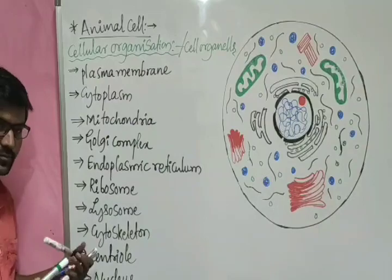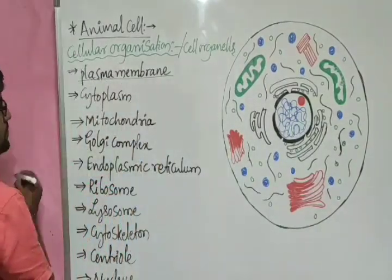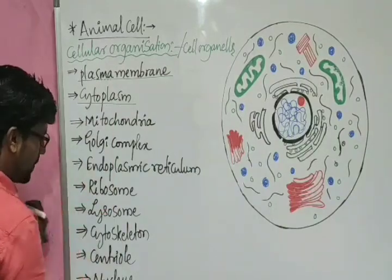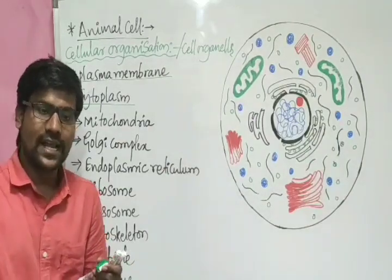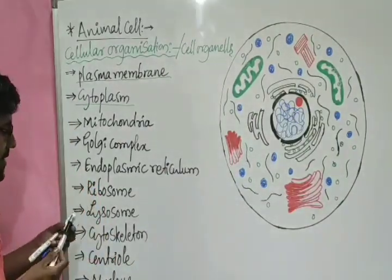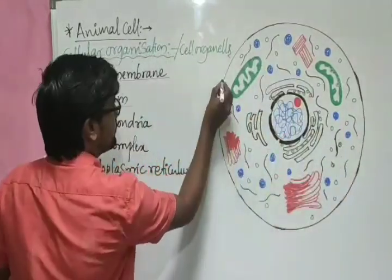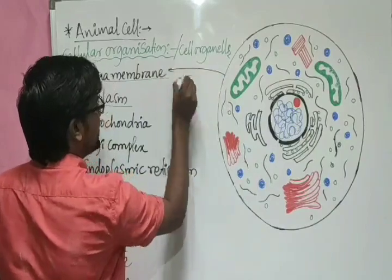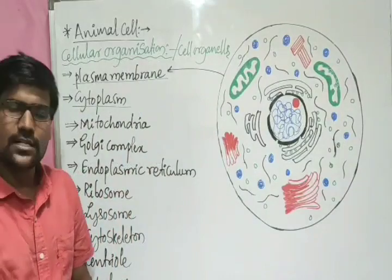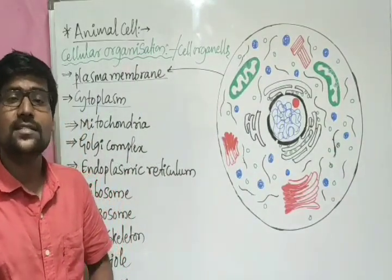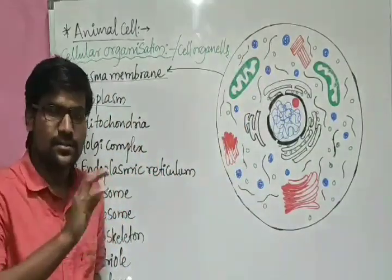Let us consider the first one — plasma membrane. This surrounding layer is the plasma membrane. It is the boundary for a cell and is compulsory present in all cells. Some cells might have an extra covering on top of the plasma membrane, but the plasma membrane itself is always compulsory. This plasma membrane is actually a two-membrane structure — it is made up of two layers.